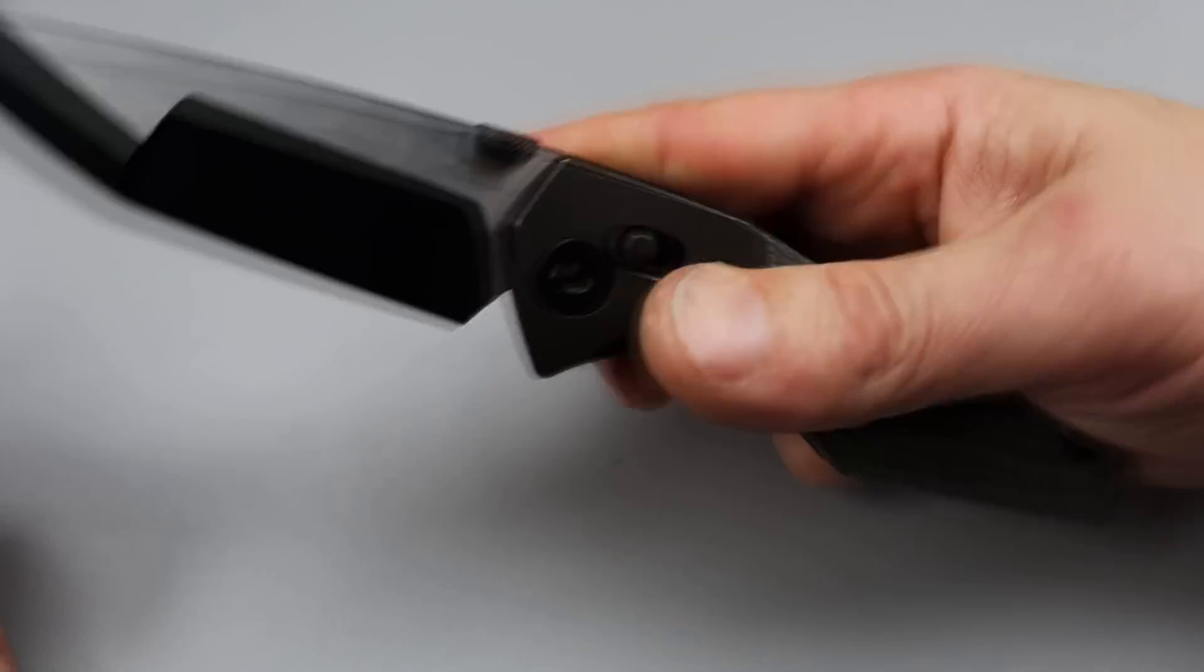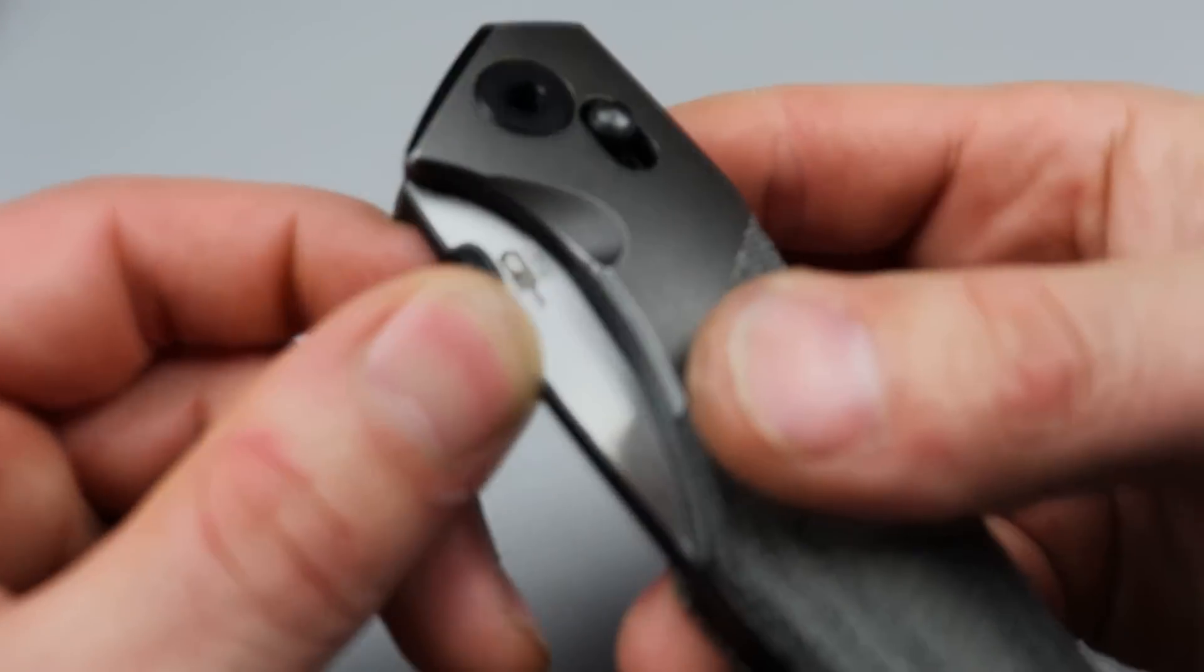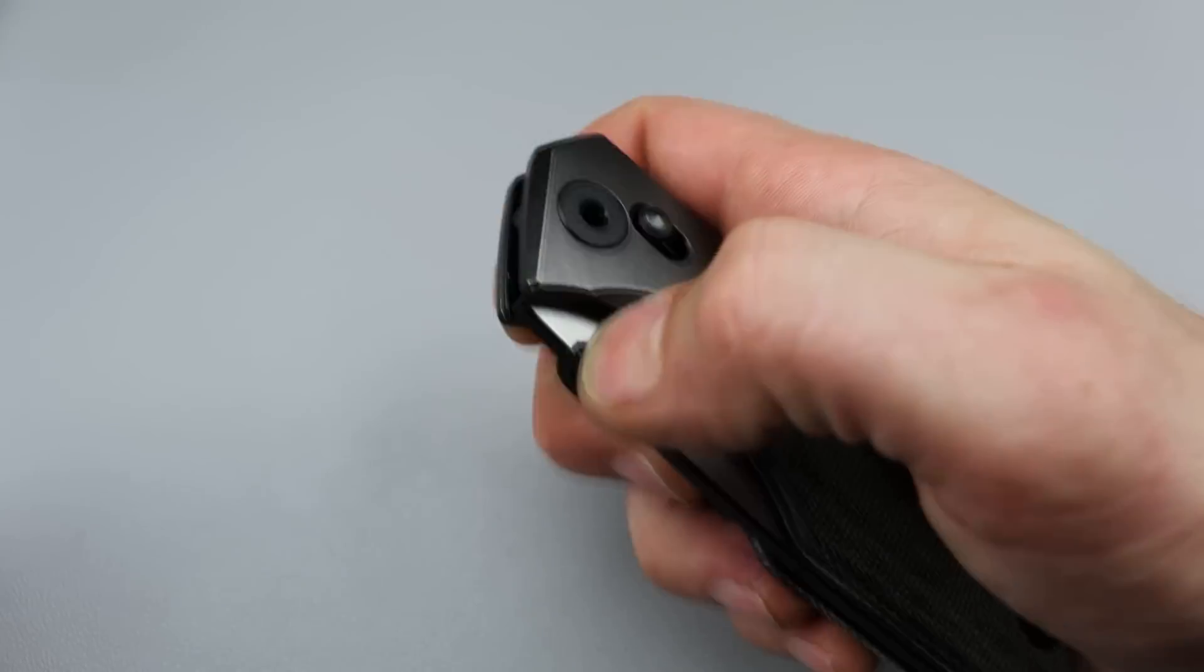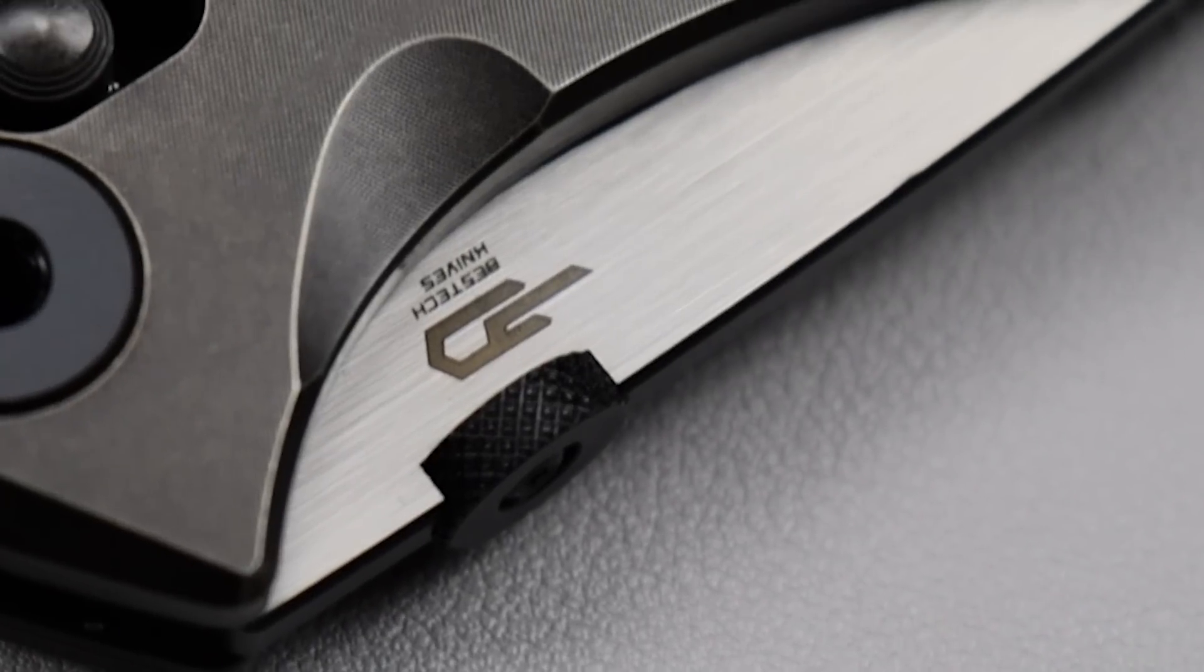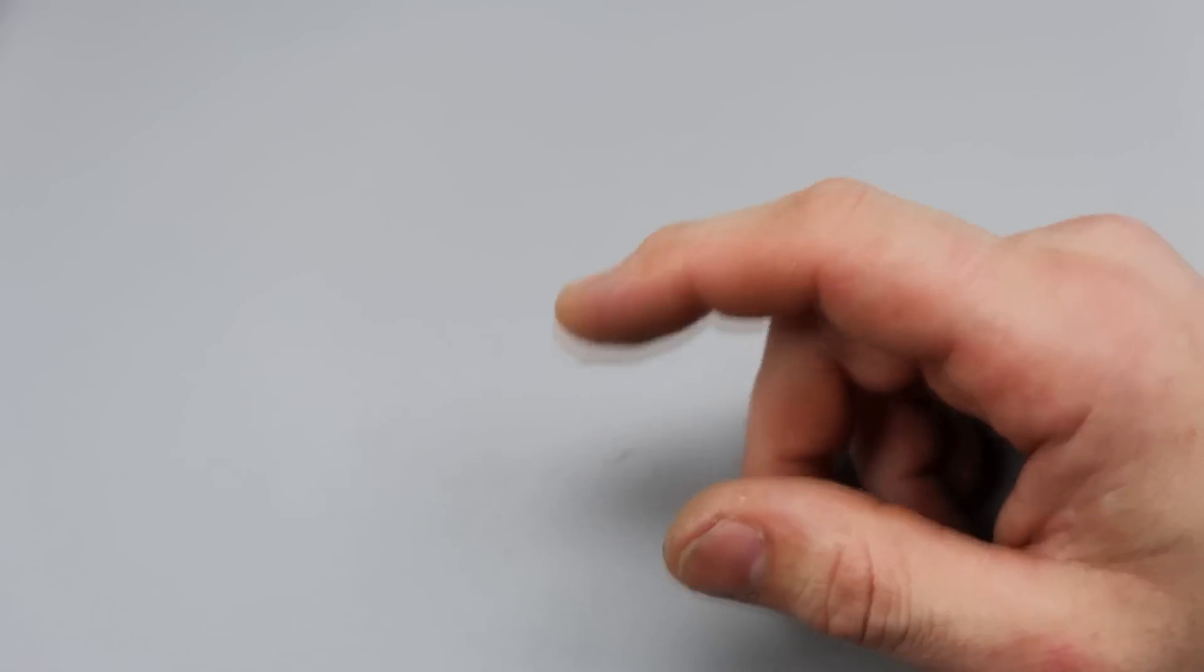Like I said, this one's one I can definitely recommend. Yes, it's a thumb disc action, which I know some people are not big fans of. They are nice and grippy, which is good. They're not slippery at all. The Bestek Cetus is an awesome, awesome knife. I'm really, really digging this one.